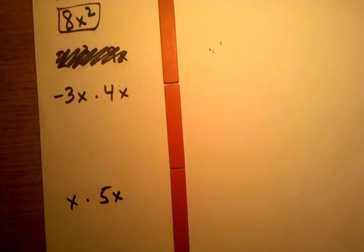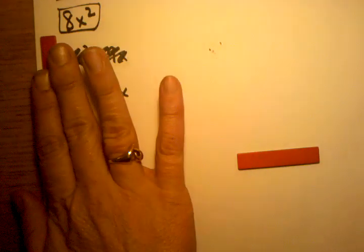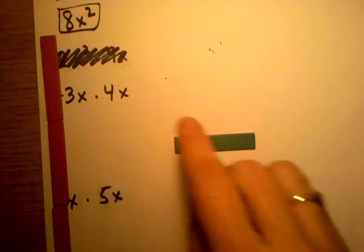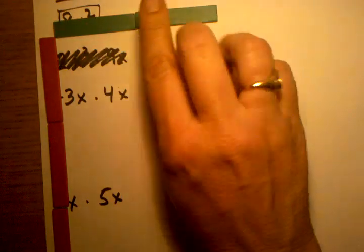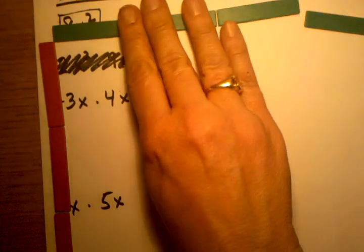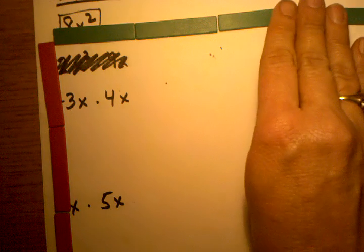And then going across, which you're not going to see all of them, you're going to have times 4x, which means I'm going to have 4 positive x's going across. So 1, 2, 3, 4. You can just see those, just barely. Okay.